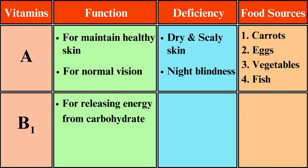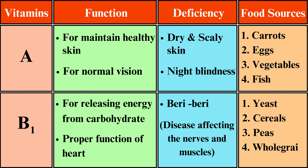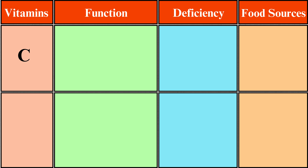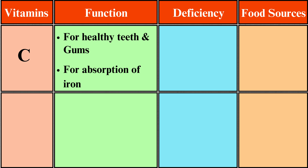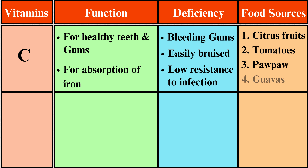Vitamin B1: function is releasing energy from carbohydrates and proper function of the heart. Deficiency causes diseases affecting the nerves and muscles. Food sources include yeast, cereals, and peas. Vitamin C: function is for healthy teeth and gums and absorption of iron. Deficiency causes bleeding gums, easy bruising, and low resistance to infection. Food sources include citrus fruits, tomatoes, and papaya.